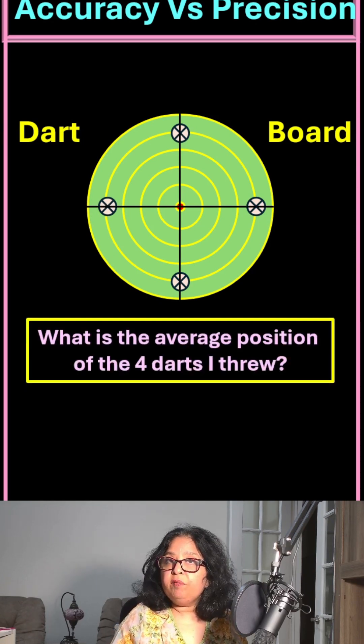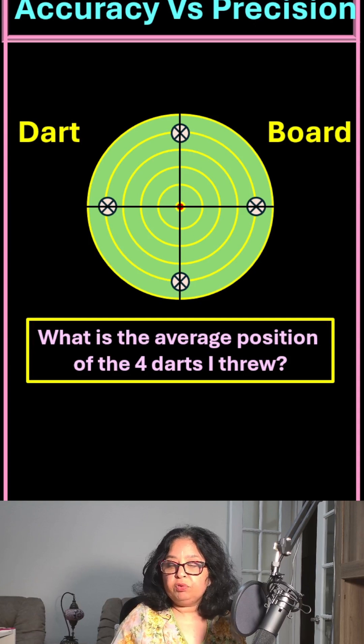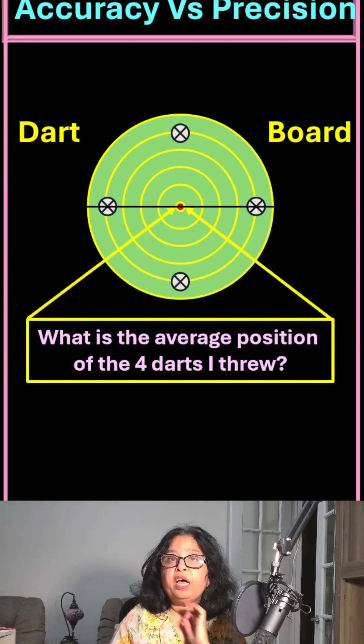However, where is the average position of these four darts that I threw? The average position is at the bullseye.